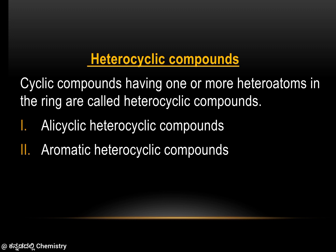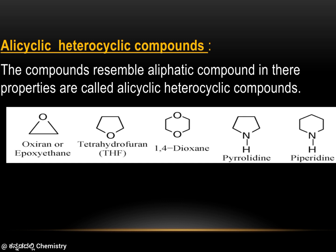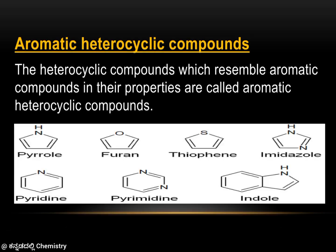The second type is heterocyclic compounds, where the ring contains at least one heteroatom such as sulfur, nitrogen, or oxygen along with carbon atoms. These are classified into two types: alicyclic heterocyclic compounds and aromatic heterocyclic compounds. Alicyclic heterocyclic compounds have a ring with a heteroatom but no double bonds. Examples include Oxirane, THF, 1,4-Dioxane, Pyrrolidine, and Piperidine.